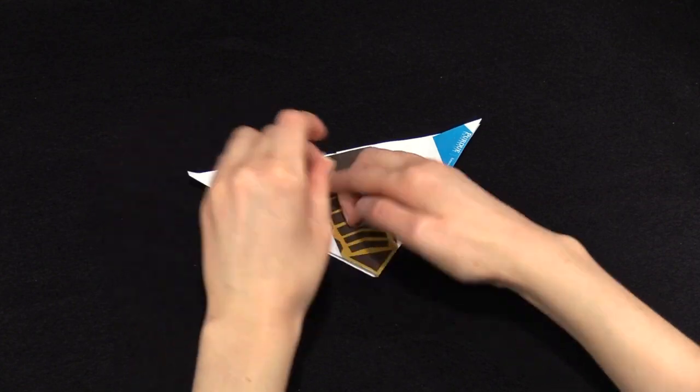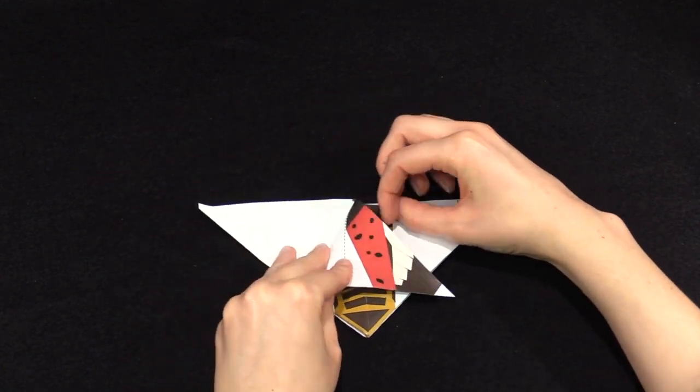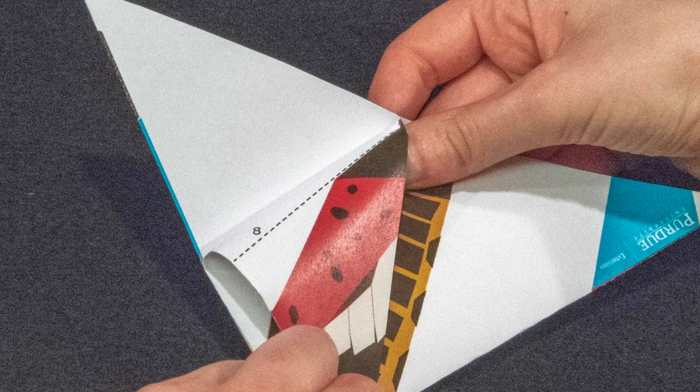Look for the line labeled 8. It's hidden behind the blue Purdue logos. Fold along the line and repeat on the other side.